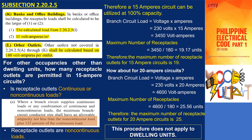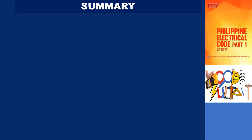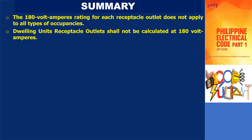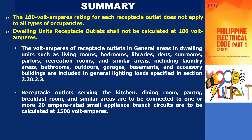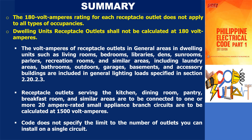However, this procedure does not apply to dwelling units. The code does not specify the limit to the number of outlets you can install on a single circuit. To summarize, the 180 volt amperes rating for each receptacle outlet does not apply to all types of occupancies. Dwelling unit receptacle outlets in general areas such as living rooms, bedrooms, libraries, dens, sunrooms, parlors, recreation rooms, and similar areas, including laundry areas, bathrooms, outdoors, garages, basements, and accessory buildings, are included in general lighting loads specified in section 2.20.2.3. Receptacle outlets serving the kitchen, dining room, pantry, breakfast room, and similar areas connected to 20-ampere rated small appliance branch circuits are to be calculated at 1,500 volt amperes. The code does not specify a limit to the number of outlets on a single circuit.